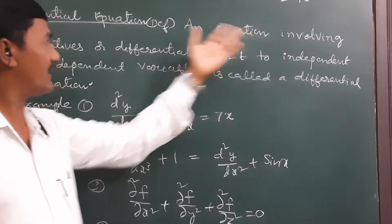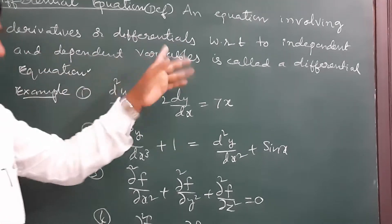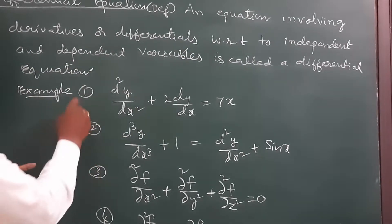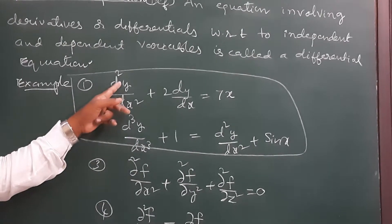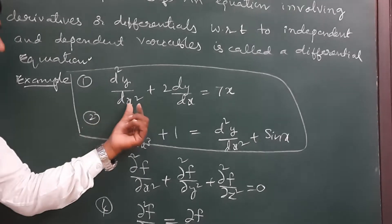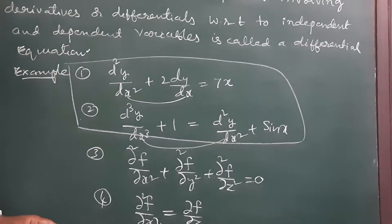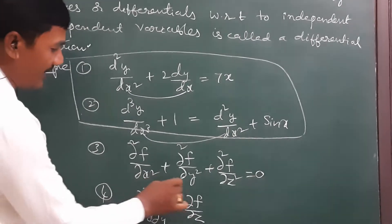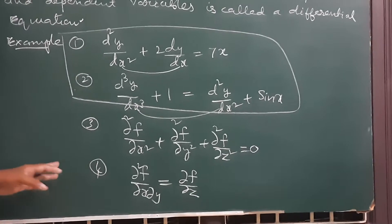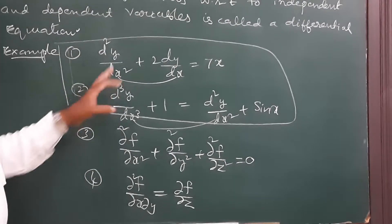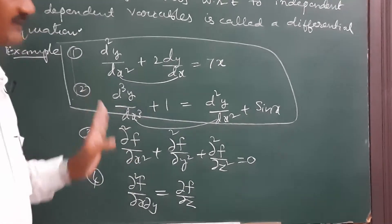A differential equation is an equation involving derivatives or differentials with respect to independent variables. Looking at the first two examples, y is the dependent variable and x is the independent variable. Equations 1 and 2 each have one independent variable, so they are called ordinary differential equations. Equations 3 and 4 have x, y, and z all as independent variables, so they are examples of partial differential equations.